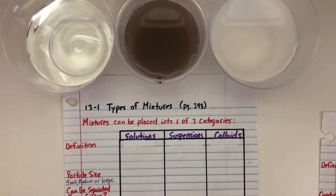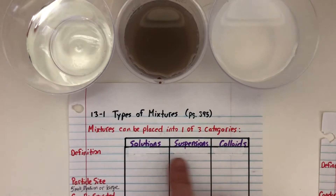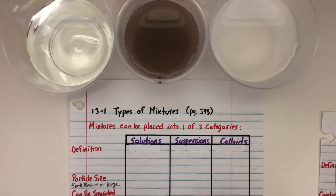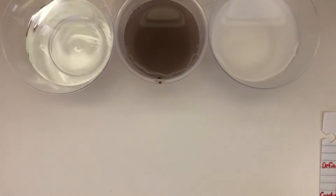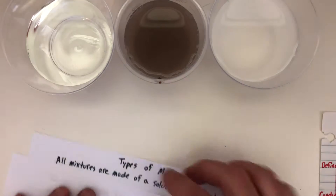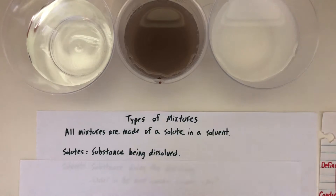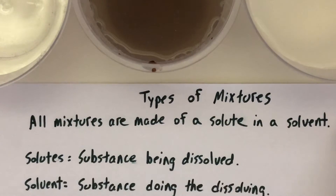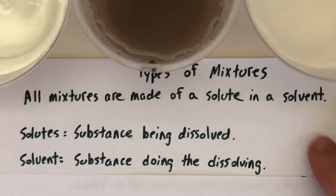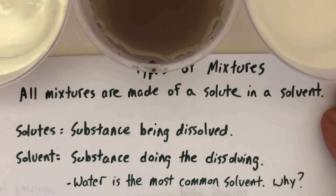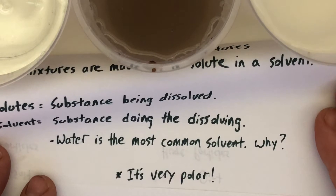Mixtures can be put into any one of these three categories: solutions, suspensions, and colloids. One of the things I had you look up was what is a solute and a solvent. All mixtures are made up of a solute and a solvent. Solutes are substances that can be dissolved, while the solvent is the substance that's doing the dissolving. The most common solvent is water, because it's really polar and able to pull apart molecules very easily and dissolve them.